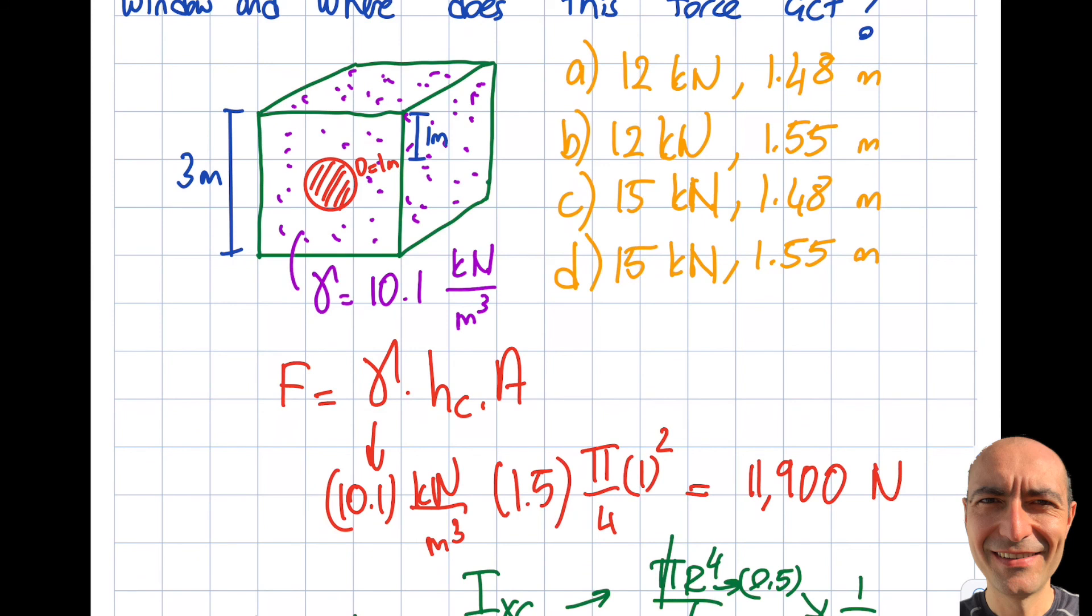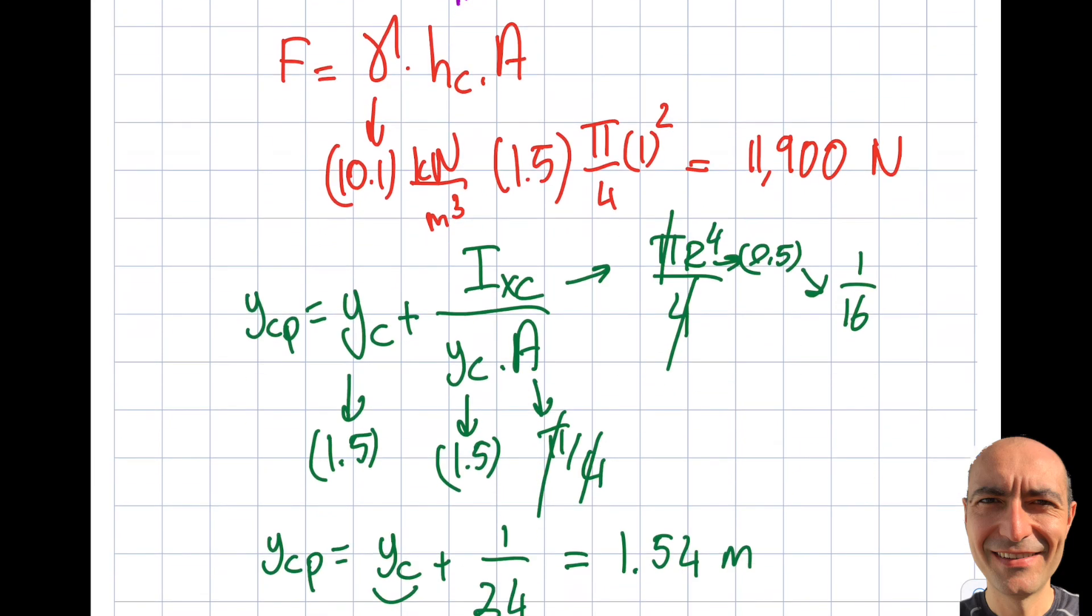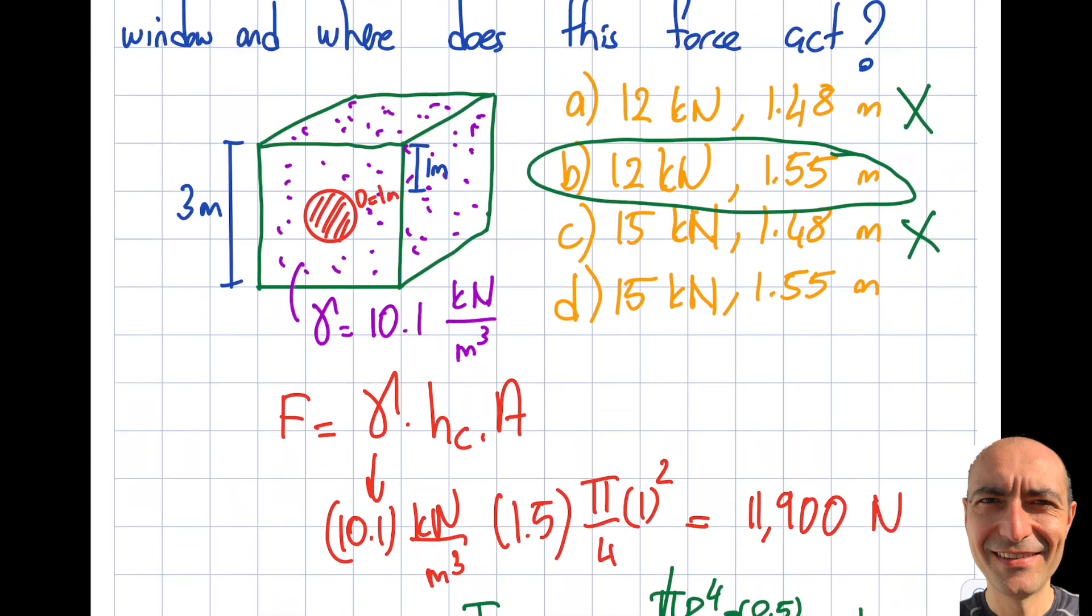But again, note that this could not have been the answer, and this could not have been the answer as well. Because, as I said, this YCP, right here, is always a little bit more than YC. So this 1.5, how can it be 1.48? So you can eliminate some choices like that as well. Thank you for watching this video.